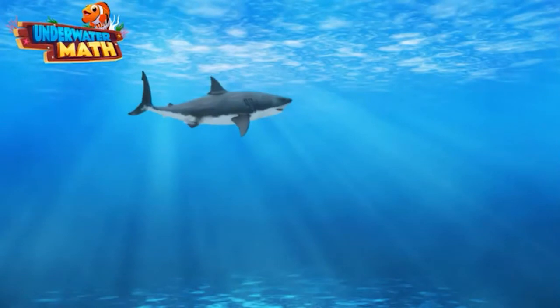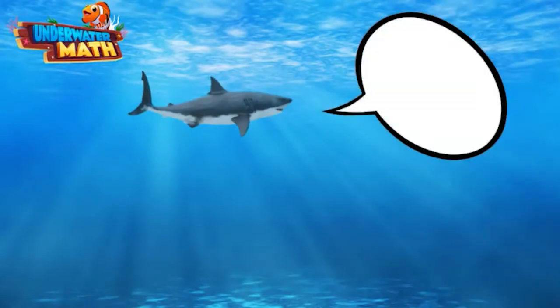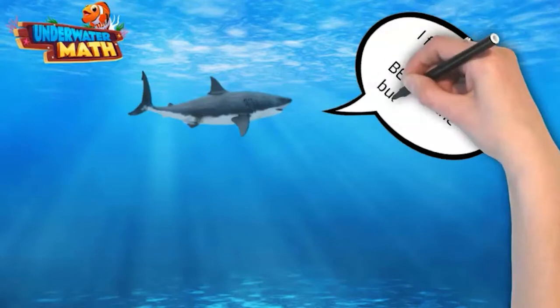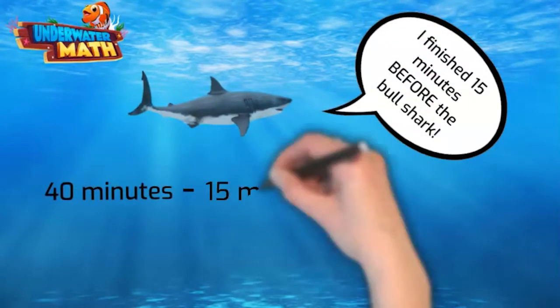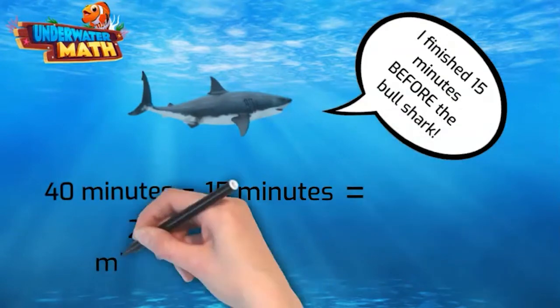But wait, there is another way to solve this problem. The great white shark finished the race 15 minutes before the bull shark. So we can just subtract 15 minutes from the bull shark's time. This gives us the time the great white shark completed the race.